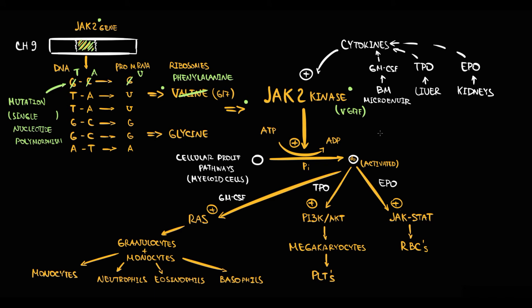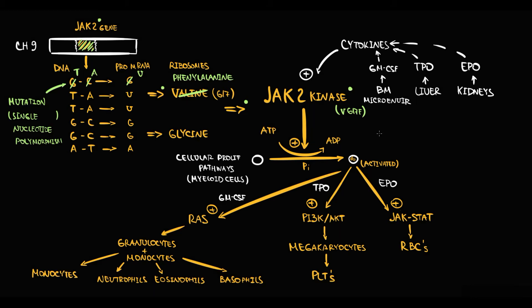Recall that in normal conditions, JAK2 kinase is active only when it receives a signal from cytokines. But this mutation causes persistent activation of JAK2 kinase — the state of JAK2 kinase is no longer determined by cytokines. With this mutation, JAK2 kinase becomes constantly active and basically begins to function on its own.